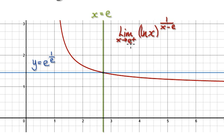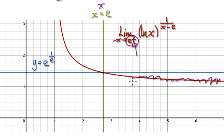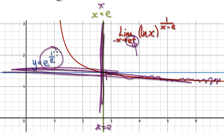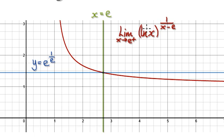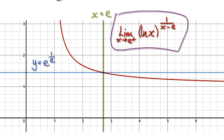If you plot this on a graph, this is x equals e here. As x tends to e from the positive direction — you're heading towards e here — and this blue line is e to the power of 1 over e. So as you head towards e from the positive direction, you are heading towards this number, confirming our answer.